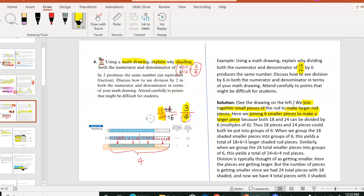So 18 pieces and 24 pieces could both be put into groups of 6. And when we group 18 of them into groups of 6, we have 3 gift boxes or 3 groups. And similarly, the total number of slices, 24, can be grouped into 4 gift boxes. So this explains what we just did here. And next, attend carefully to the points that might be difficult for students.